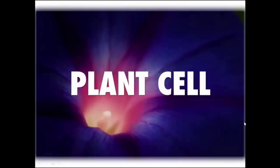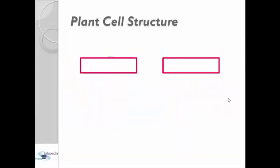We are going to talk today about plant cells. Plant cells are considered eukaryotic cells like animal cells. We have two types of plant cells. The first one is the vascular and the second one is the non-vascular.